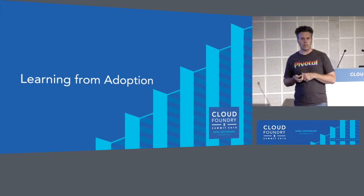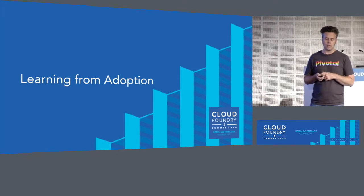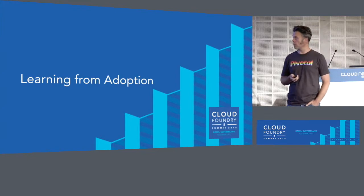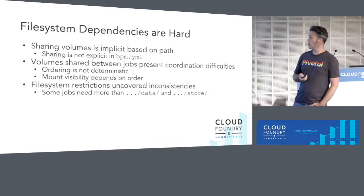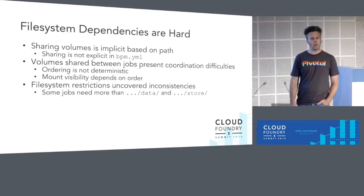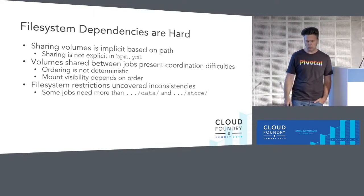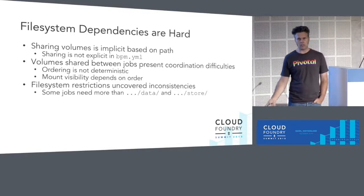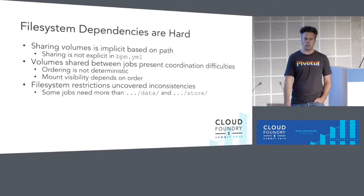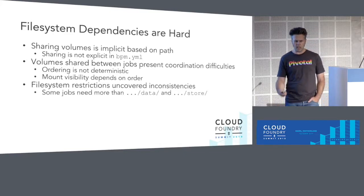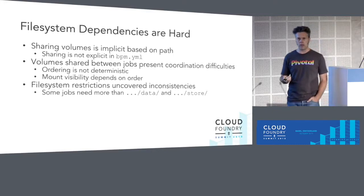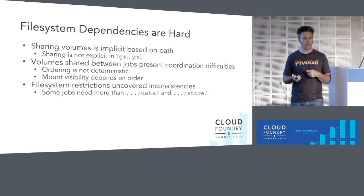Some things we learned while getting the CF application runtime to adopt BPM. File system dependencies are super hard. Sharing volumes right now is implicit and based on path in the BPM file — we're not super happy about this, but it's a good first step. If you want to share a directory between job A and job B, both of them have to include that as a volume they mount inside their BPM YAML. Because Monit doesn't start things in a deterministic way, this might run into weird mount visibility options if jobs are doing interesting things with the file system.